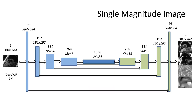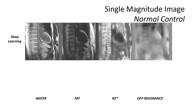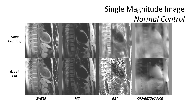Next, we trained the U-Net CNN to provide water-fat separation and parameter mapping from a single magnitude image. Water-fat separation results from a normal control look quite promising. Compared to the graph cut method, water and fat images are comparable, though there are some differences in isolated areas. The R2 star maps look superior to the graph cut method, and the off-resonance looks somewhat similar.